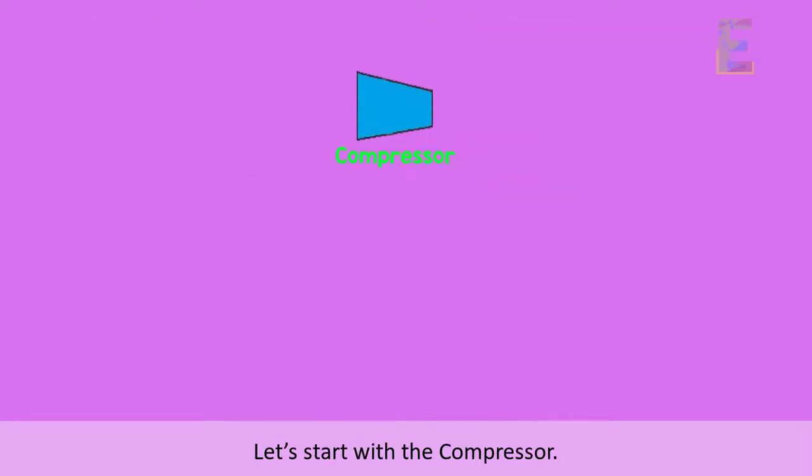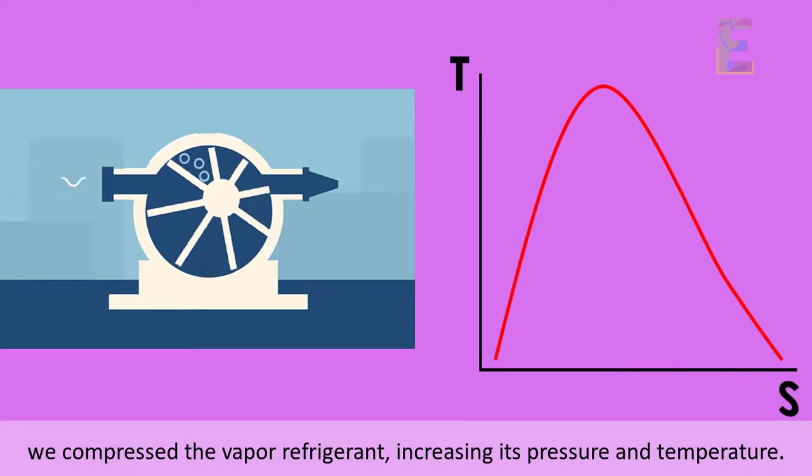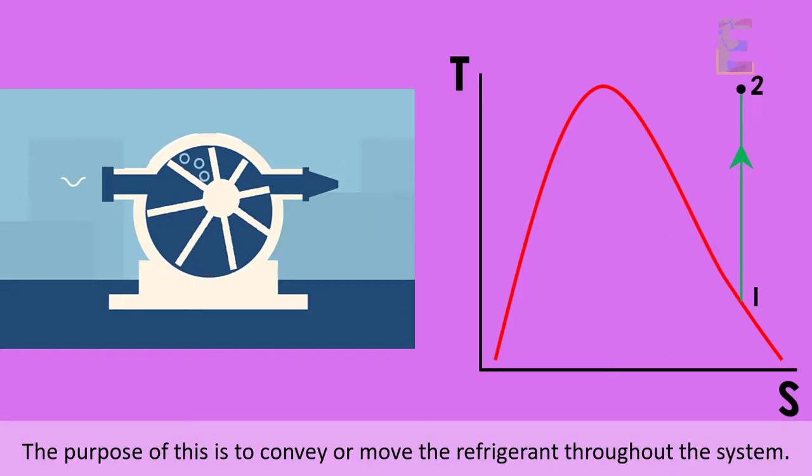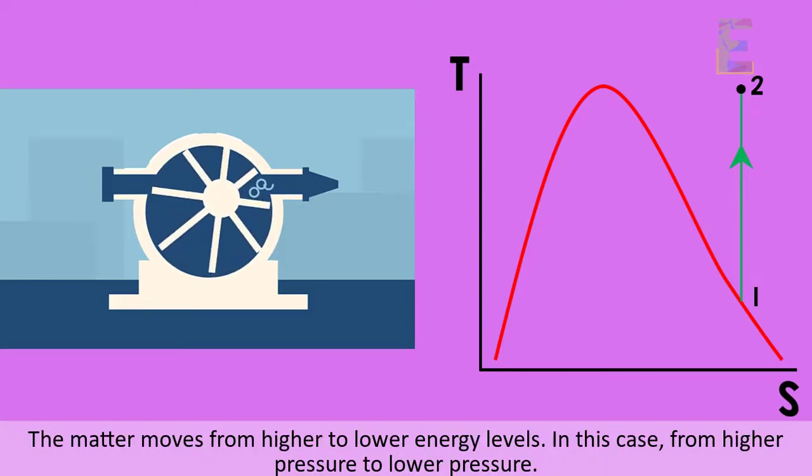Let's start with the compressor. Here at the compressor, we compress the vapor refrigerant, increasing its pressure and temperature. The purpose of this is to convey or move the refrigerant throughout the system. As we all know, by the second law of thermodynamics, in order for particles or matter to move, we need a difference in energy level. The matter moves from higher to lower energy levels. In this case, from higher pressure to lower pressure.